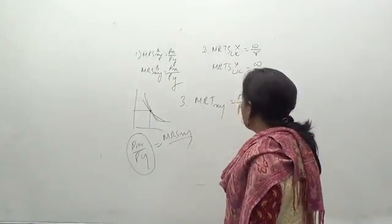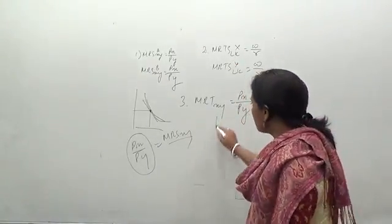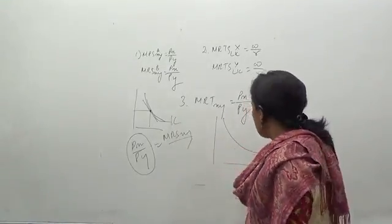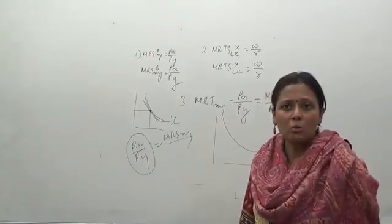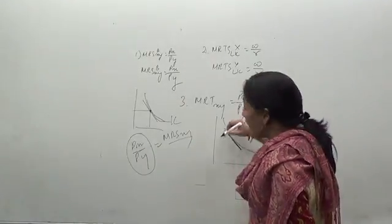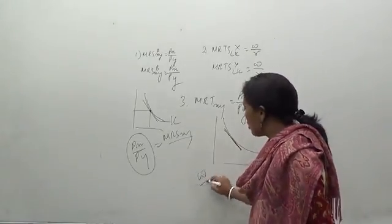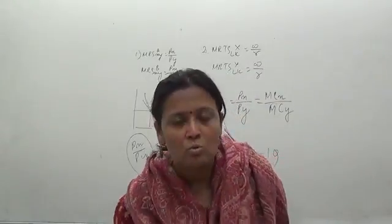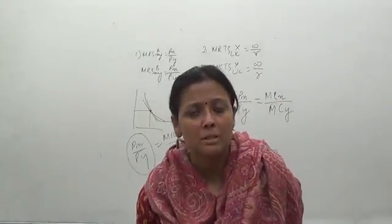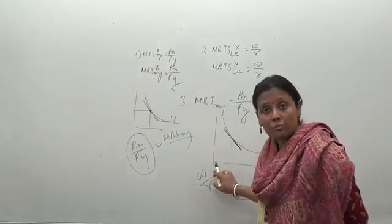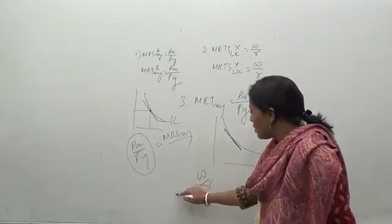In the second condition, MRTS LK that is something which will be represented by the isoquant. This was indifference curve, now we have come to the isoquant. The isoquant is something which will be tangent to the isocost. And the isocost is nothing but the ratio of the prices of the two factors which is used. If we have taken labor and capital, then W by R can be considered as the price ratio of the factors, and that has to be equal to the MRTS LK.